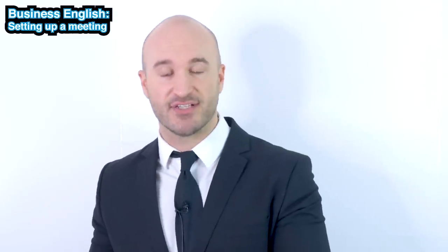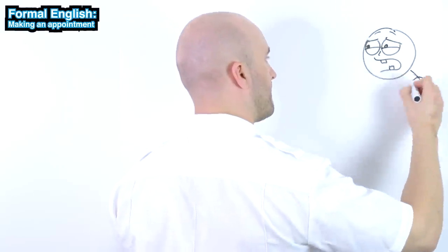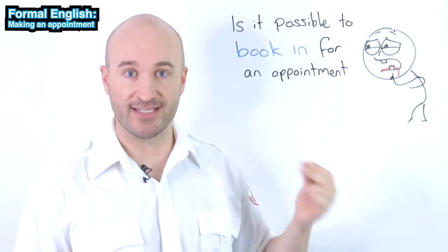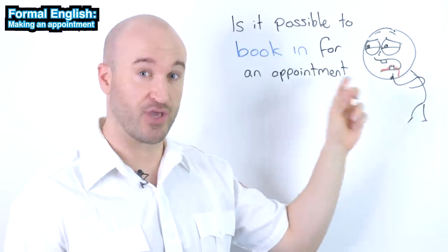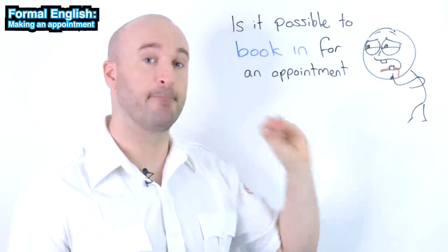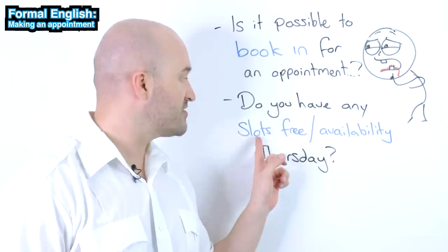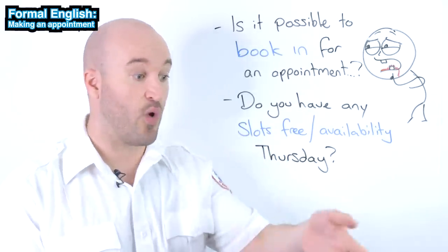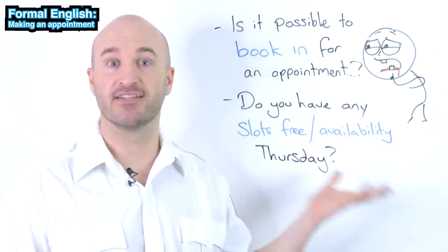Let's look at other situations. If you need to make an appointment with a doctor, optician, or dentist — whoever provides a service where you need to make an appointment — that's a specific type of formal English. You have a problem with your teeth. You need to make an appointment with the dentist: 'Hi, is it possible to book in for an appointment on Thursday?' To book in means you reserve a time, you reserve an appointment. 'Do you have any slots free? Do you have any availability Thursday?' A slot is a time period — for example, the 1pm slot, the 2–3 slot. That's quite standard.